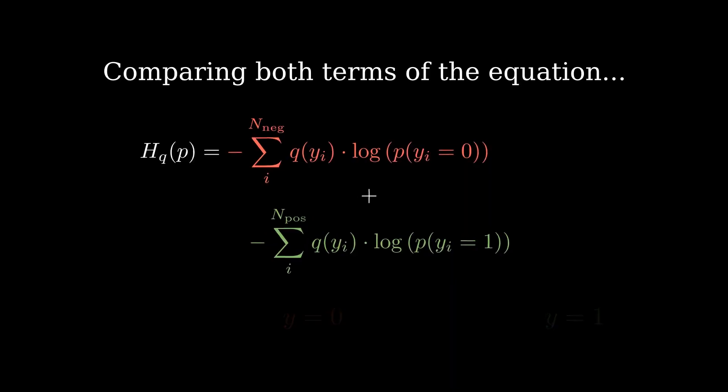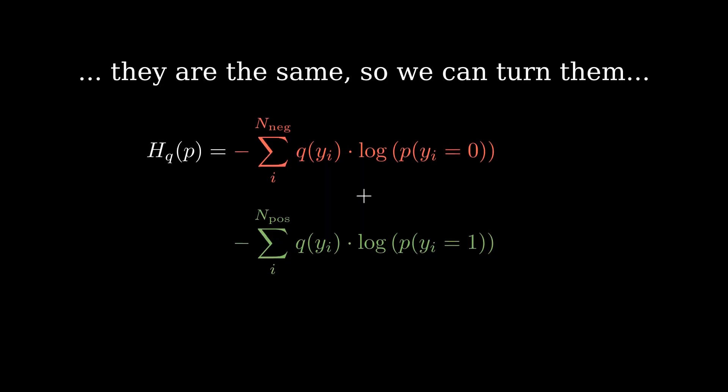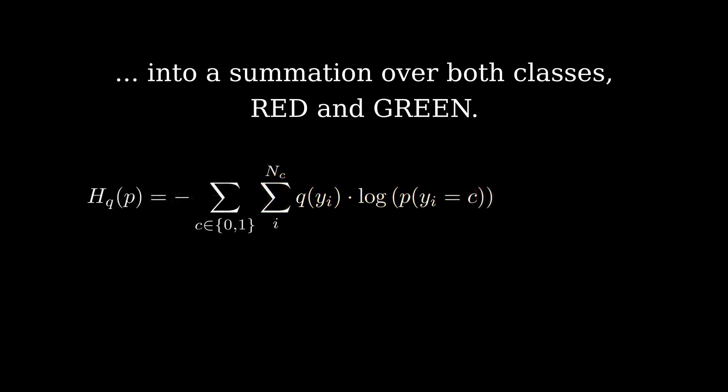Perhaps you notice that both terms, for negative and positive classes, are quite similar to one another. So we can turn them both into a summation over both classes, red and green.